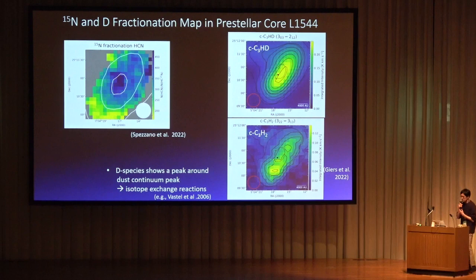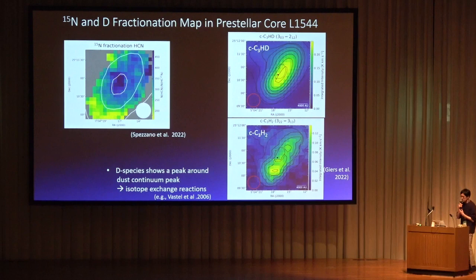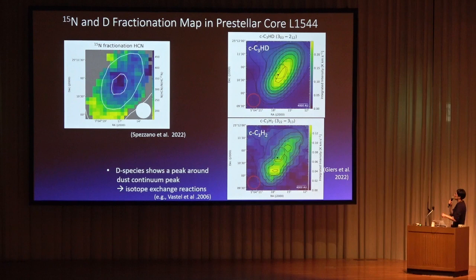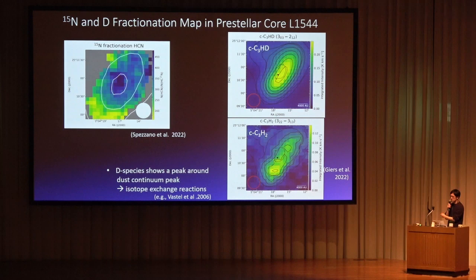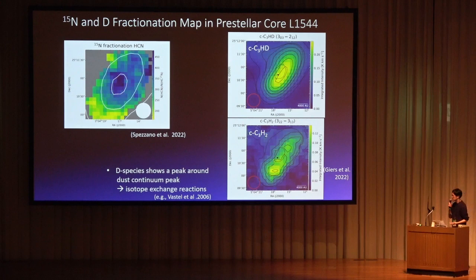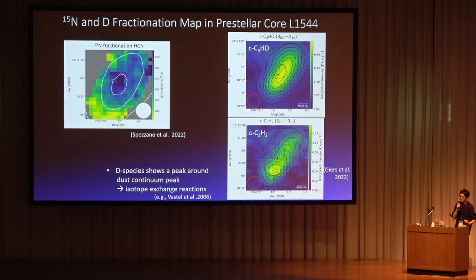How about deuterium chemistry? Here is a map of C3HD and C3H2 emission in the same core. If we look at the C3HD emission, the peak corresponds to the dust continuum peak. On the other hand, C3H2 emission is offset from the dust continuum peak, meaning the D-to-H ratio is highest in the core center. This is different from the nitrogen isotope case, and it means that isotope exchange reaction is the main driver of deuterium chemistry.